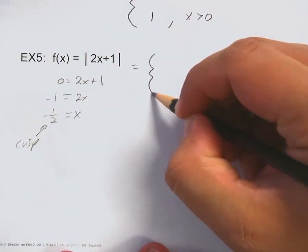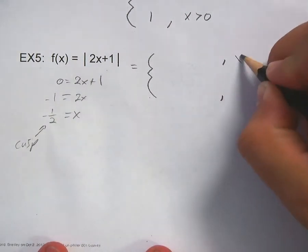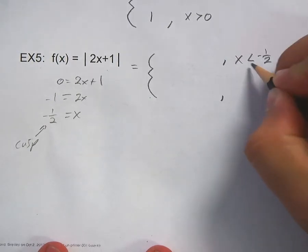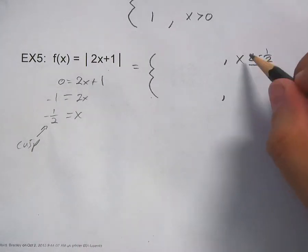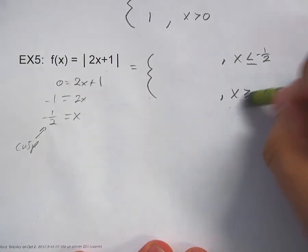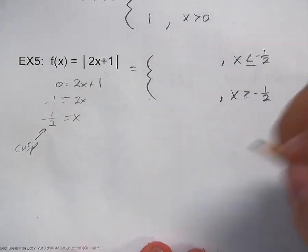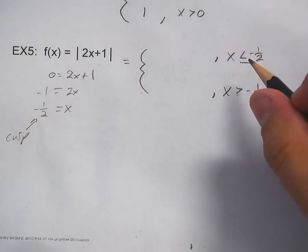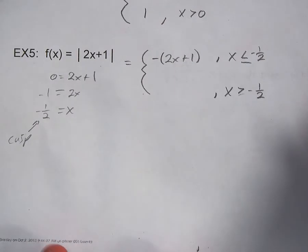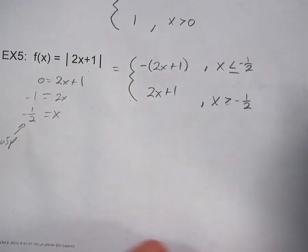To give you an idea of what this looks like: the division lines are when x is less than negative one half and when x is greater than negative one half — not equal to, since the equal sign only goes in one spot. When it's to the left it's going to be negative two x plus one, and when it's to the right it's positive two x plus one. Think about the graph of this piecewise function.